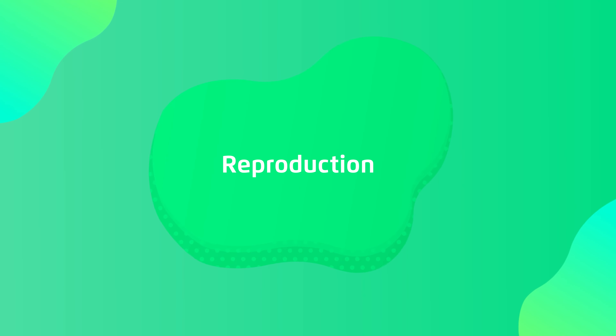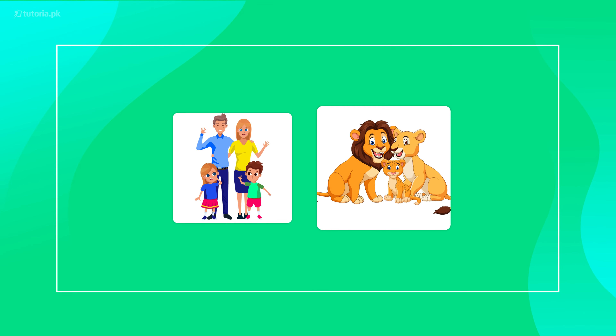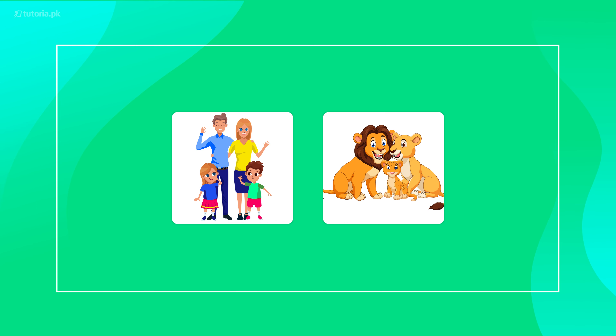Hello students, assalamu alaikum. This is Laiba Tarek, your biology instructor from tutorial.pk. Today we are doing Chapter 18, which is Reproduction. Living things have a continuity of life; they all have the ability to reproduce. If they don't reproduce, they can't continue to the next generation. That's why reproduction is one of the most important characteristics of living things.